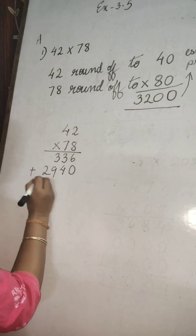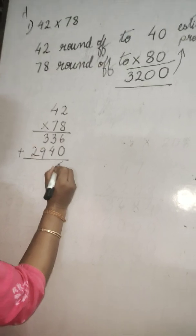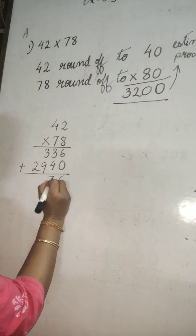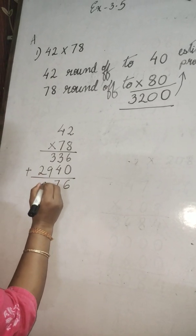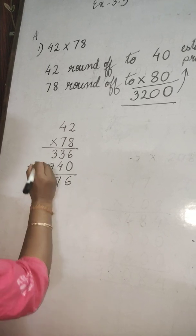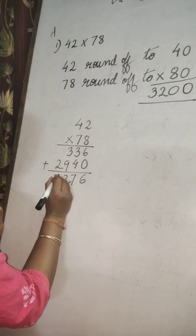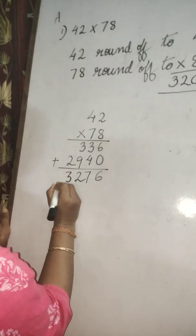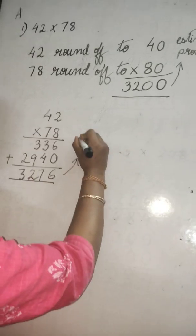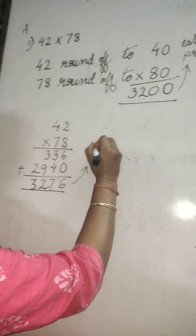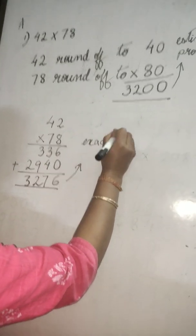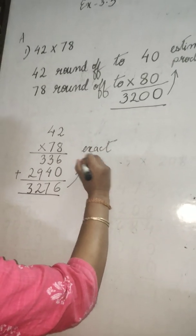Now add it. 6 plus 0 is 6. 4 plus 3 is 7. 9 plus 3 is 12, carry 1. 2 plus 1 is 3. So this is the exact product.